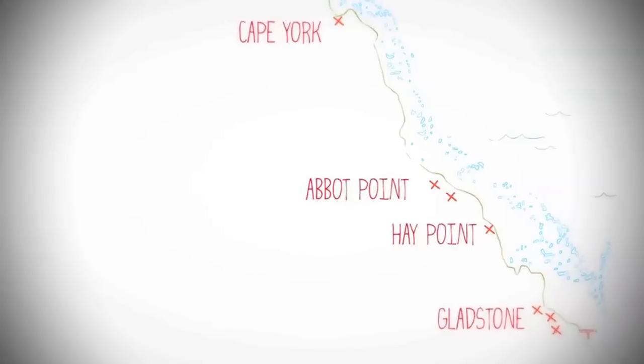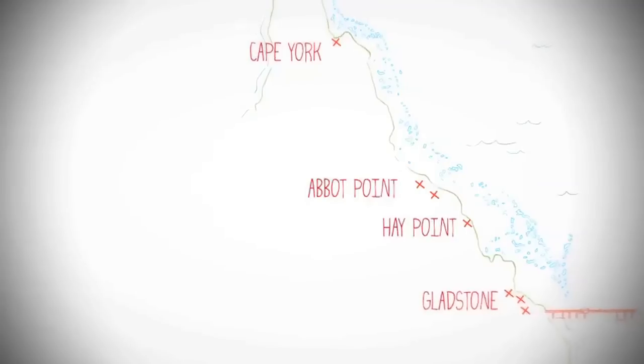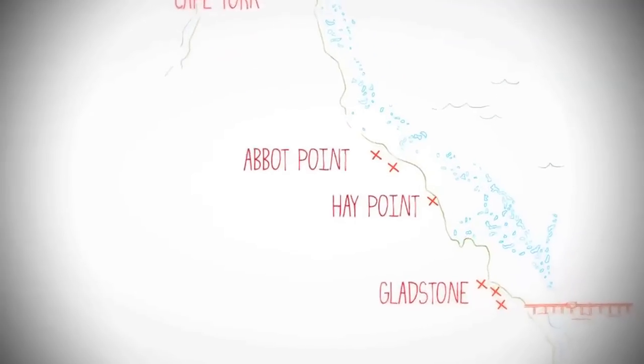But what a lot of us don't realize is that the fossil fuel industry, both coal and coal seam gas, is closing in on the reef. They have detailed plans to build and expand massive industrial ports at seven key areas along the reef, including Cape York, Abbott Point and Curtis Island.